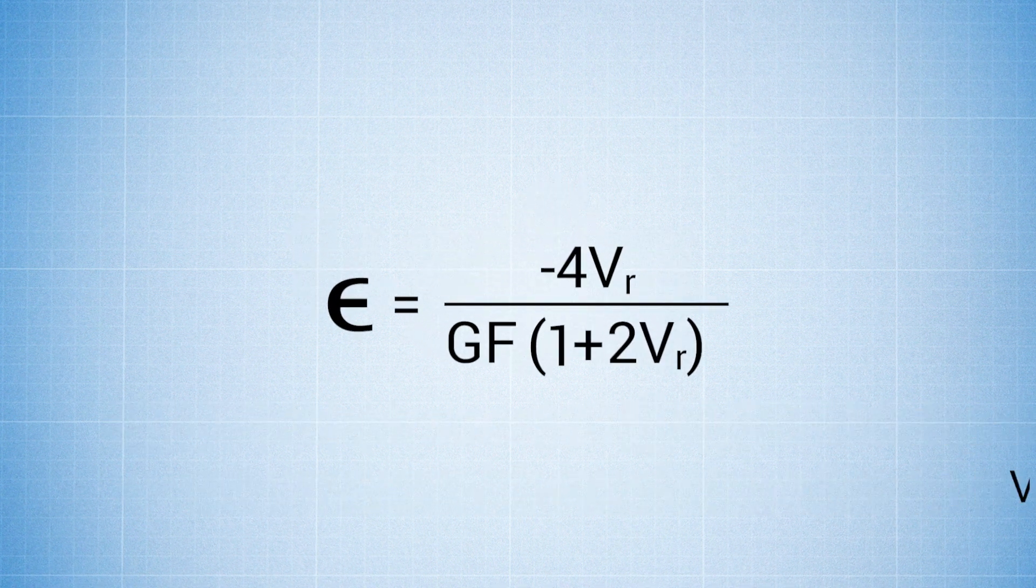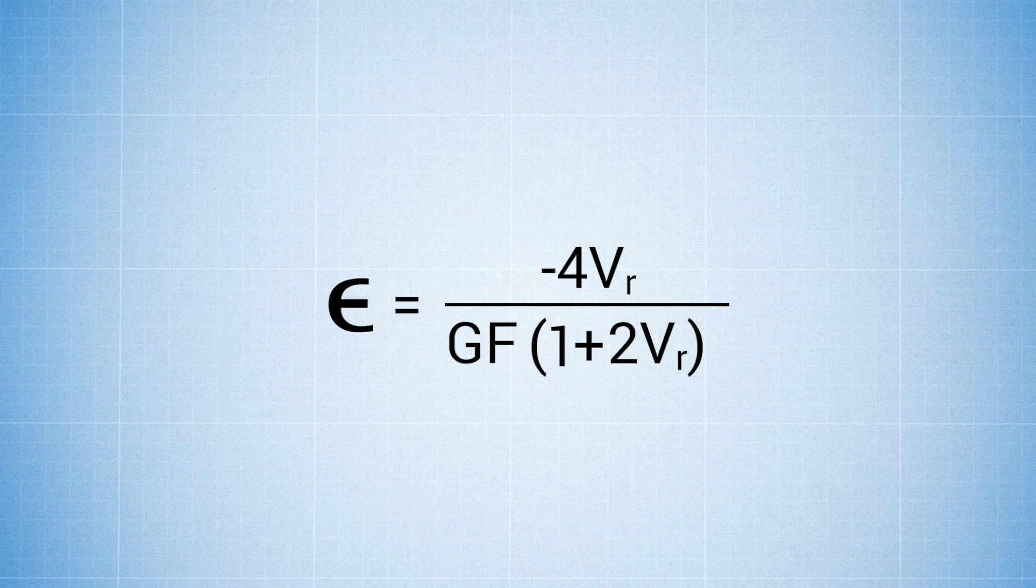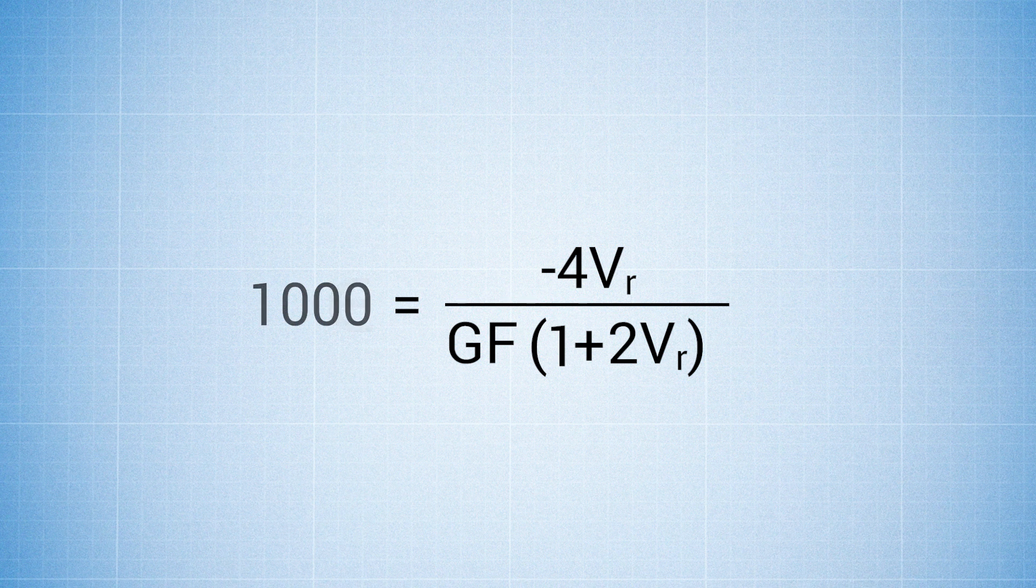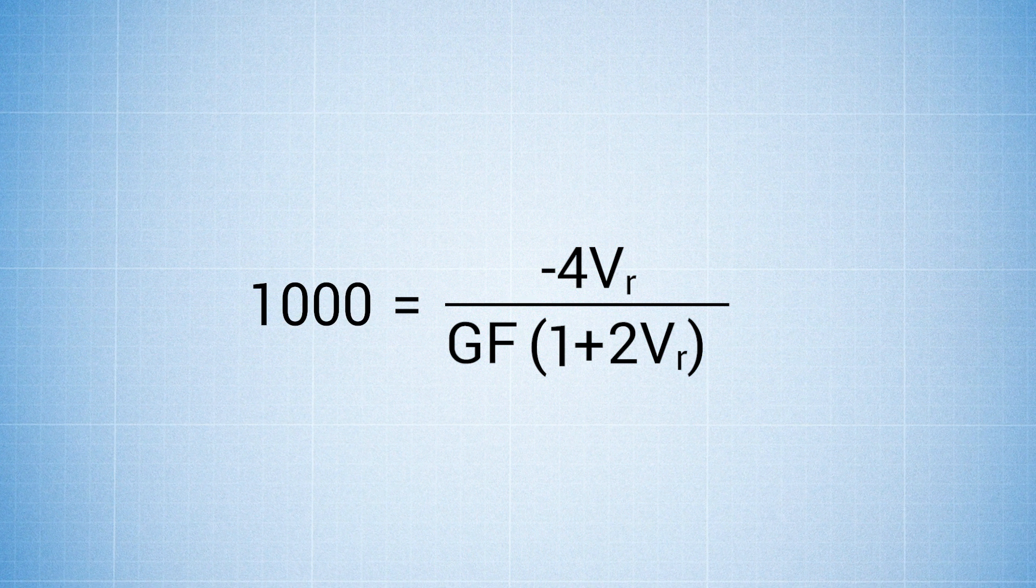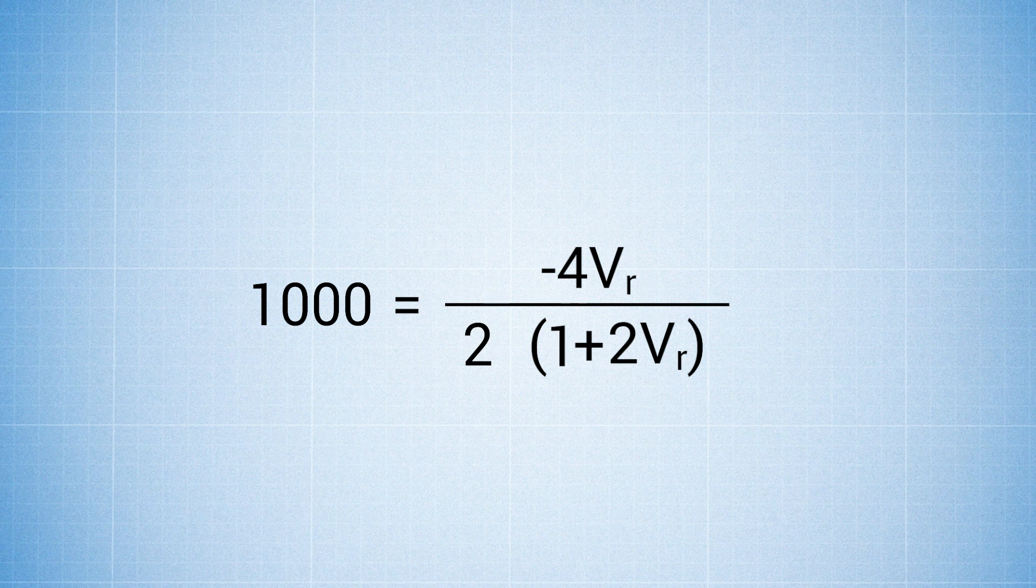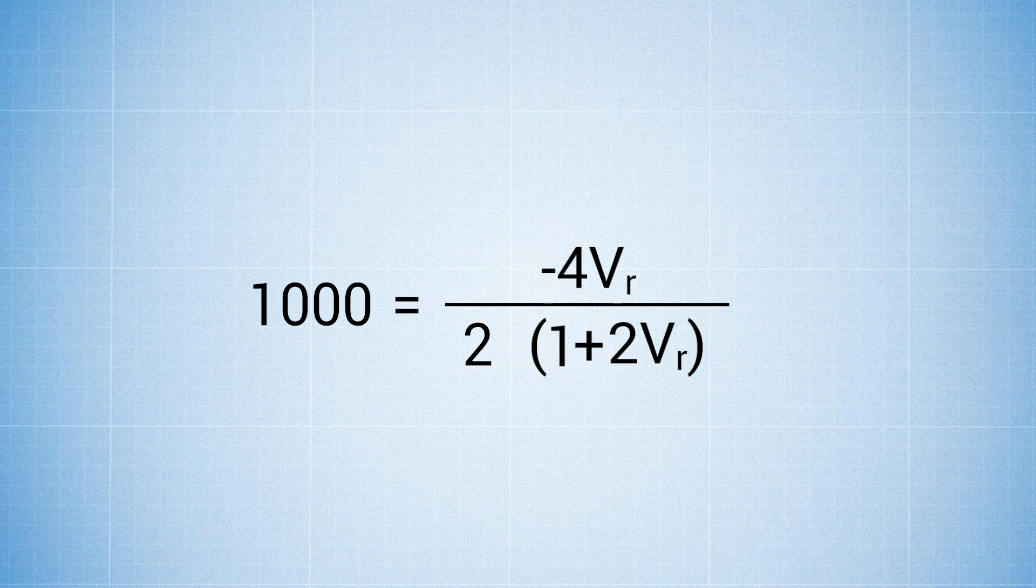We are calculating for Epsilon, which is strain. Pull any number from the air. For this case, let's say Epsilon equals 1,000 microstrain. So 1,000 equals negative 4 times Vr over Gf, which is gauge factor, in this case it's 2, times 1 plus 2Vr. We can form our equation based on that.